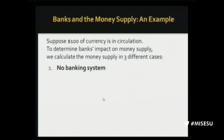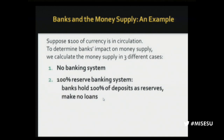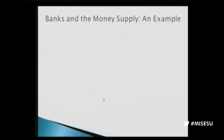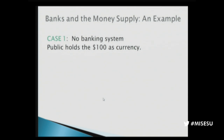Case one: no banking system. There's just currency — or if it's a gold standard, gold in circulation. There are no banks. The total money supply equals $100. No matter what anyone does — if one person makes a loan to someone else, or buys someone else's mortgage — there's no change in the money supply. There's a change in who owns cash balances. It does not increase the money supply, no matter how many loans are made.